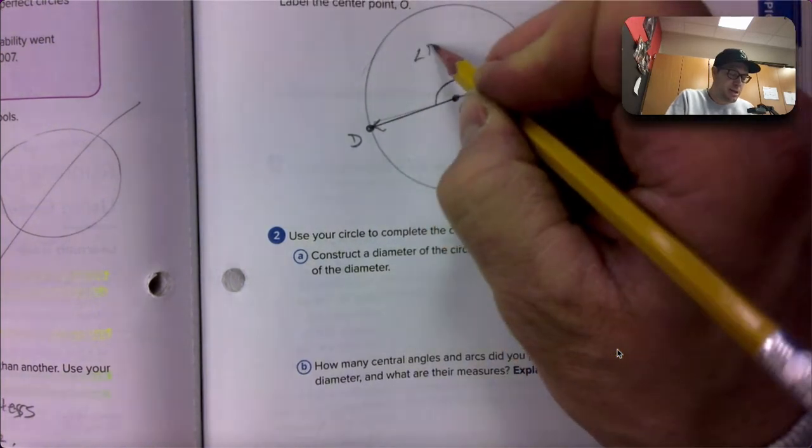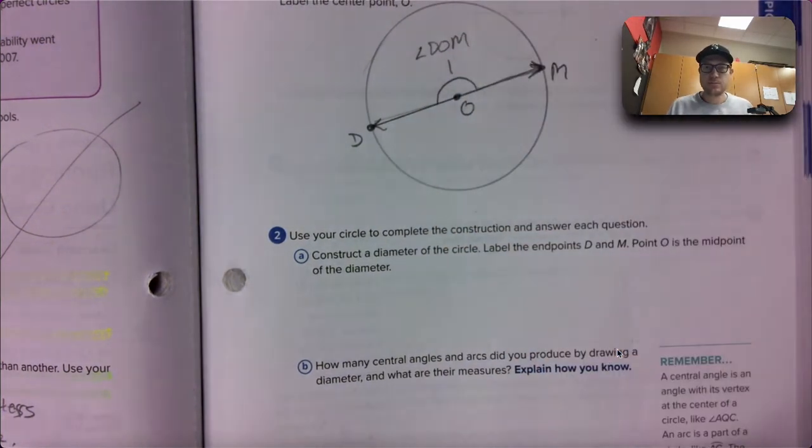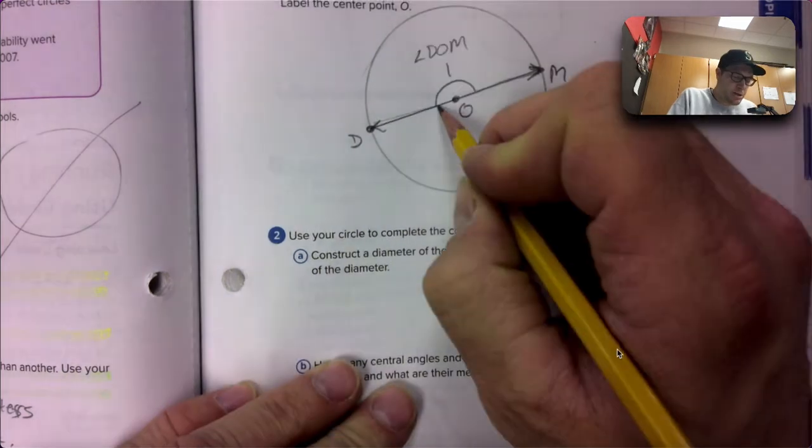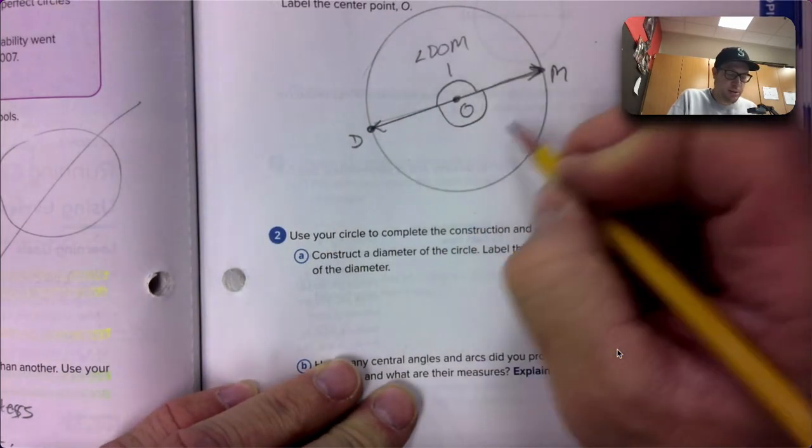Yeah, you're right. Angle M O D, that's the same thing. It goes from M to O to D. It makes that angle. Makes two central angles.